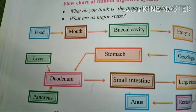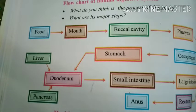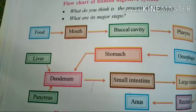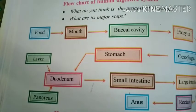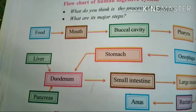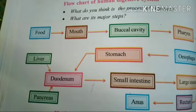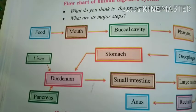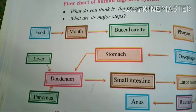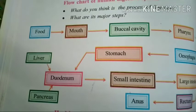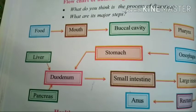The large intestine sends waste particles or unwanted substances to the rectum. From the rectum, they are sent further, and finally the defecation process takes place. So ingestion, digestion, assimilation, absorption, and defecation all happen through this system.